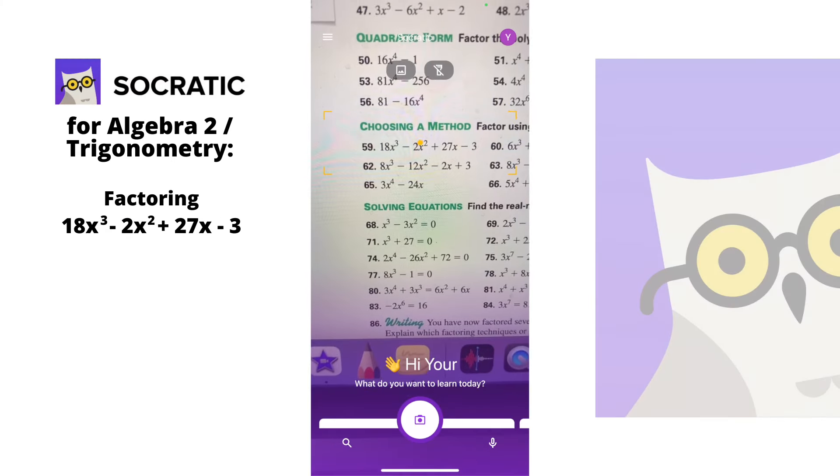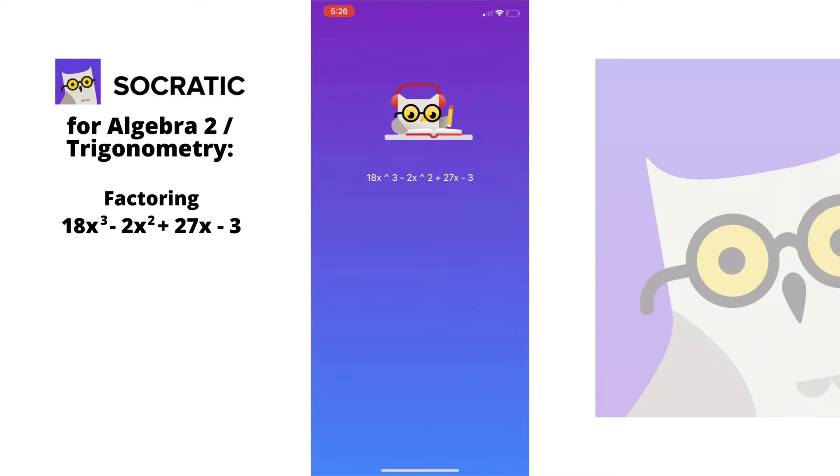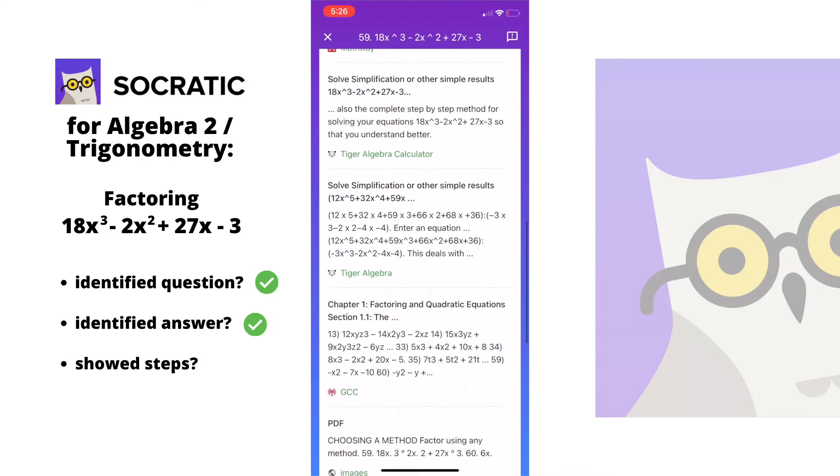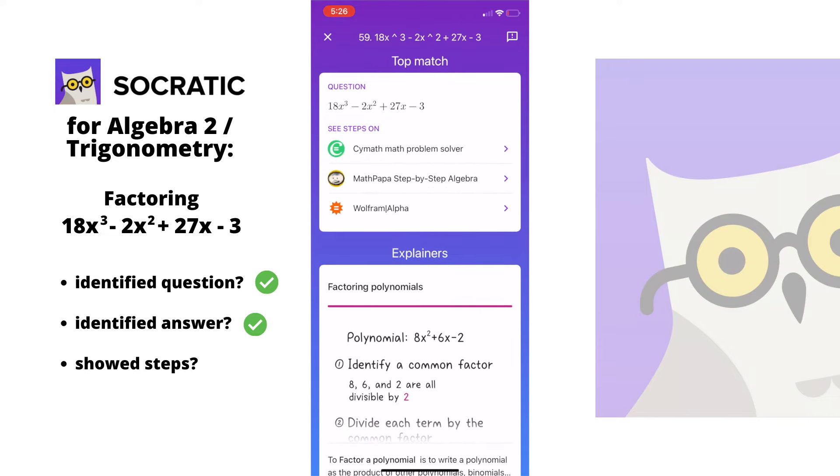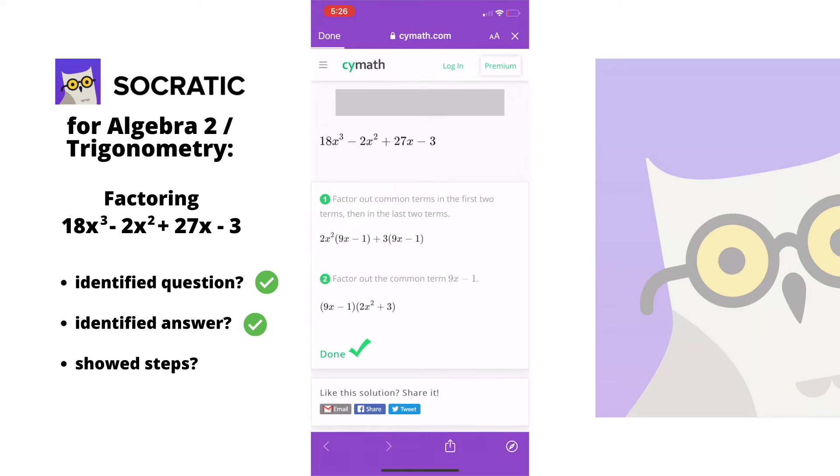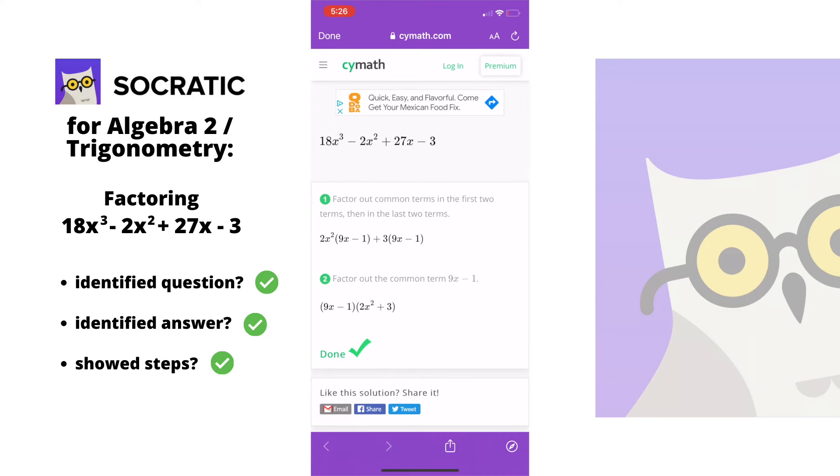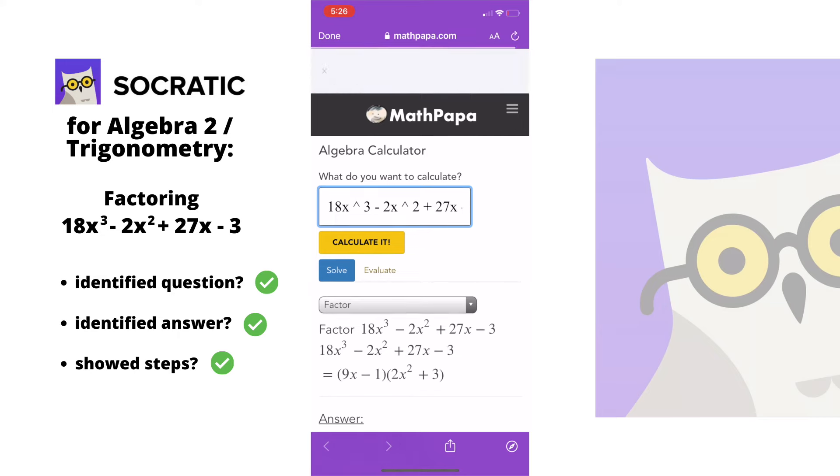For Algebra 2, I'm starting to realize that Socratic basically helps you Google search your math problem and it lists all of the other websites or apps that has the answer. Like it links you to SciMath, MathPapa, even Mathway. And these external sites are the ones that actually have the answer, which is pretty much what Google does. Like Google is a search engine and it doesn't actually have content. So this is interesting, but kind of effective.